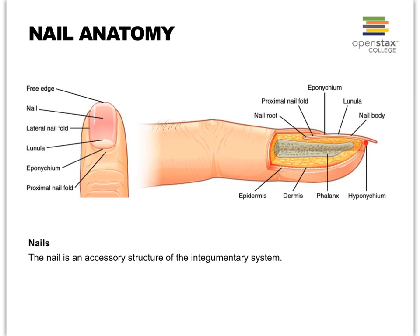Where our nail meets the skin on the surface we have the eponychium, meaning on top of, and underneath the hyponychium — 'nych' typically referring to nail. We have the nail body, and then the embedded part of the nail we call the nail root. Nearby where it reaches the dermis is the nail matrix where nail growth occurs. We can also see the lunula — the little half-moon shaped whitish structure at the base of our nail.